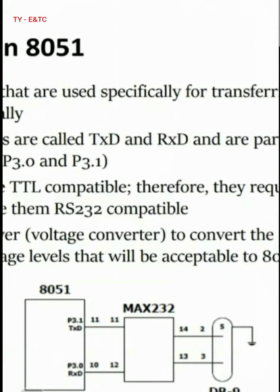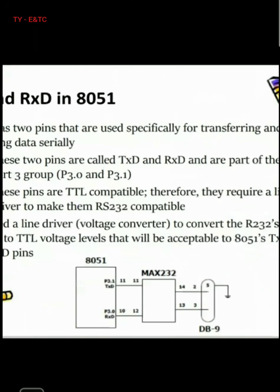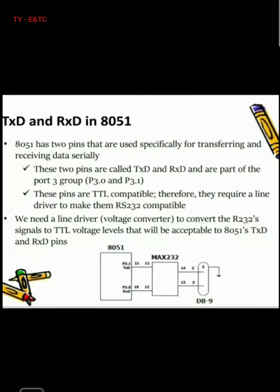On the right side is the DB9 connector and on the left side is the 8051 microcontroller. A voltage converter — the MAX-232 — is placed in the middle to convert the RS-232 signals to TTL voltage levels acceptable to the 8051.